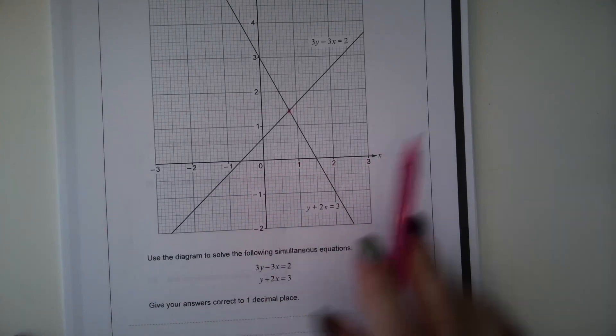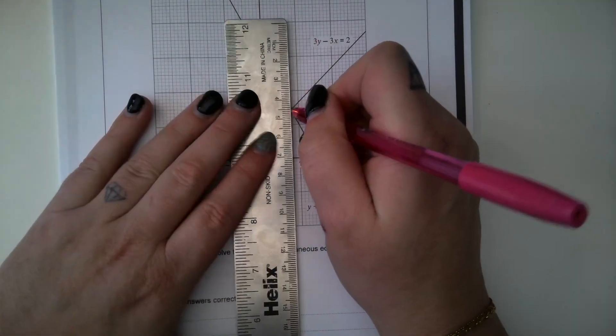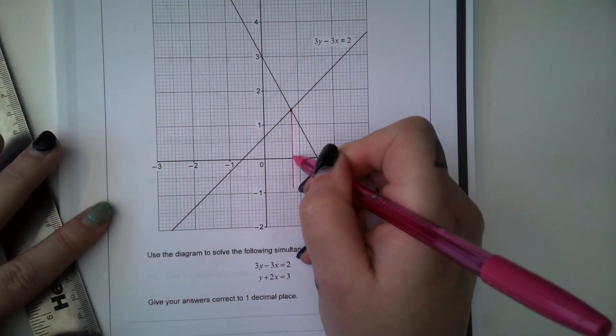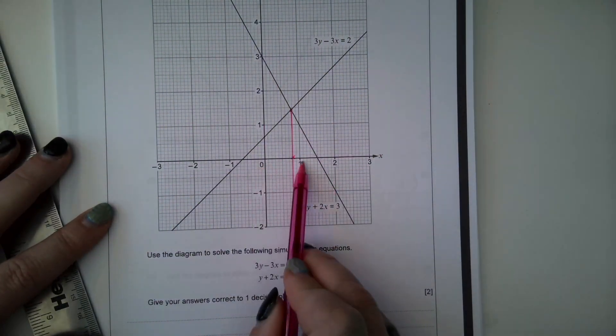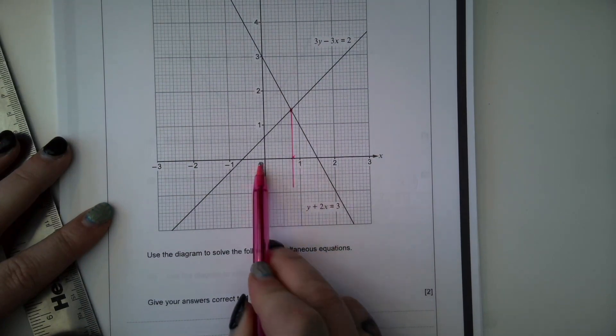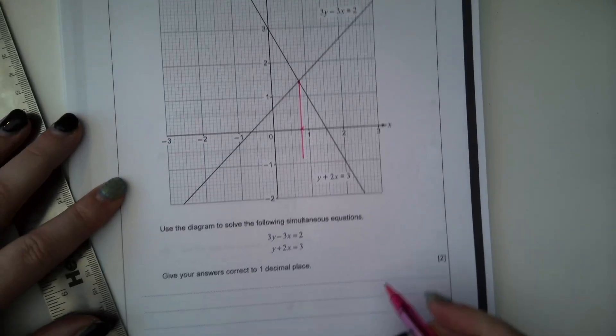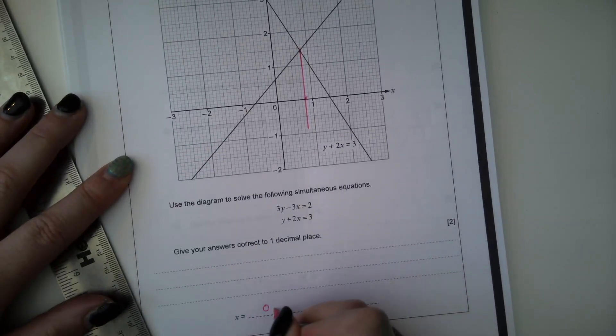It's because we don't have an exact scale here when we try and find our values. So this is going to be our X value. So 0 to 1 is 10 spaces. So that's 1, 2, 3, 4, 5, 6, 7, 8. So X is 0.8.